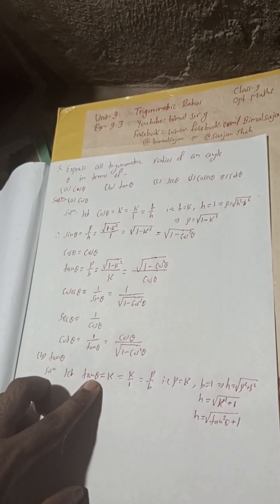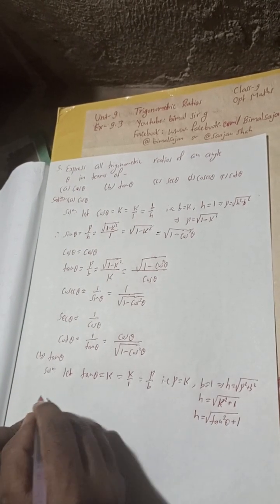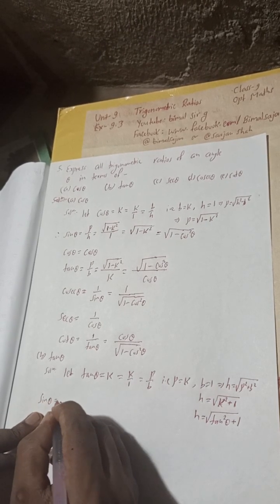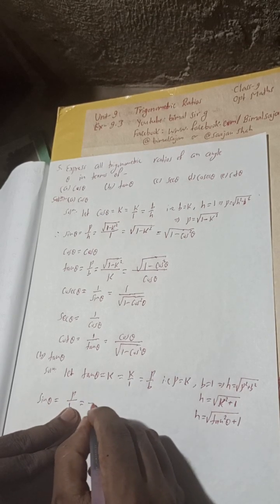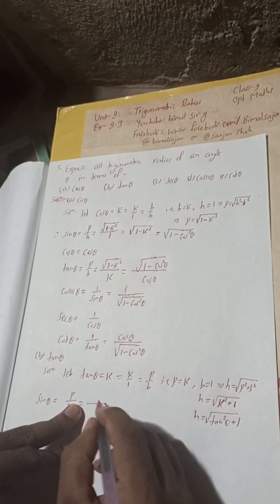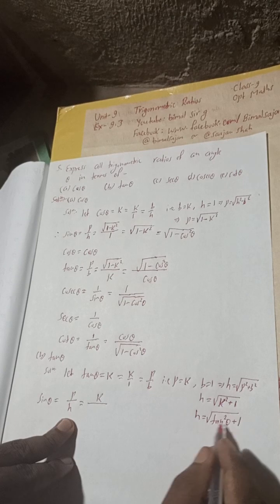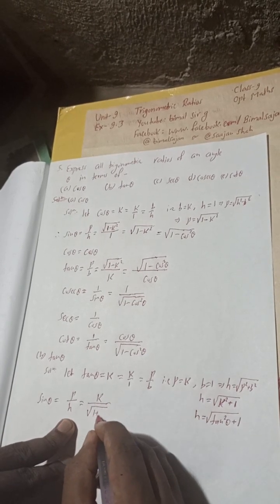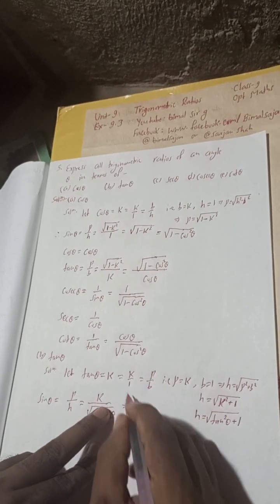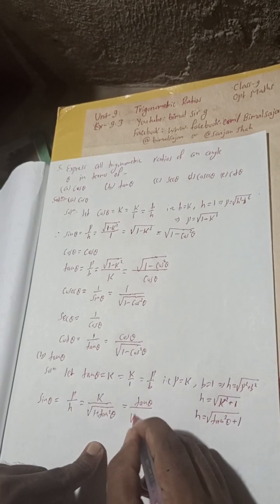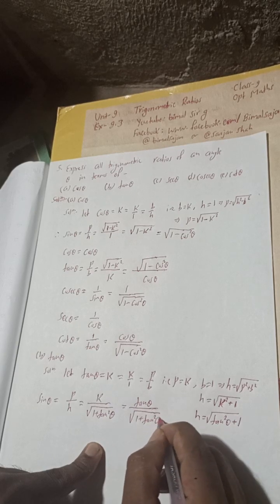Now, sin theta = p/h = k / √(1 + tan²theta). Substituting k = tan theta, sin theta = tan theta / √(1 + tan²theta).